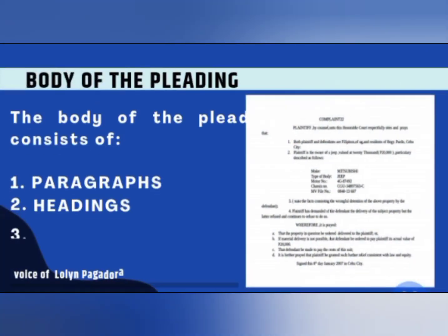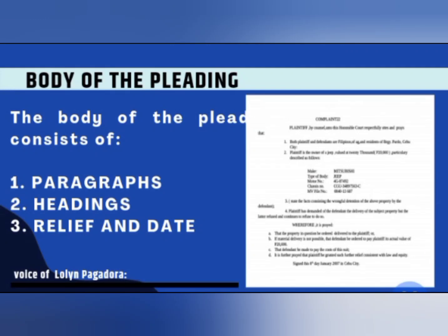The next one is the body of the pleading. The body of the pleading sets forth the type or kind of pleading filed — for example, Complaint or Answer — the statements of the party's claim or defense, the relief or remedies prayed for, and the date of the pleading. The body consists of paragraphs which contain the allegations of the party's claims or defenses. Each paragraph contains a statement of a single set of circumstances, and each are numbered for easy identification. A paragraph may be referred to by its number in subsequent pleadings.